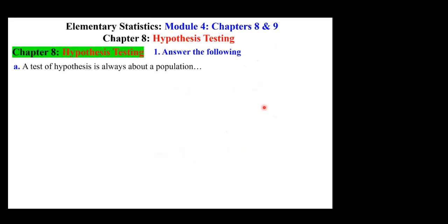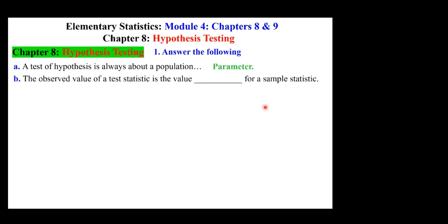A test of hypothesis is always about the population parameter. The observed value of a test statistic is the value that we calculate for a sample statistic.